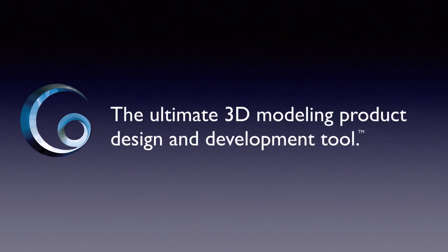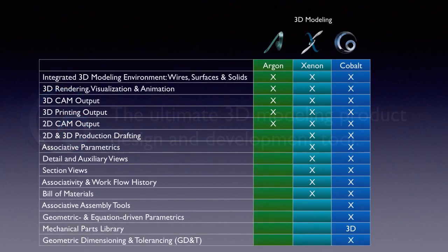Cobalt is our flagship solid and surface modeling software — the ultimate 3D modeling product design and development tool. It has everything in Argon and Xenon, plus geometric and equation-driven parametrics, associative assembly tools, a 3D mechanical parts library, and government standard geometric dimensioning and tolerancing.